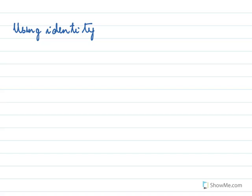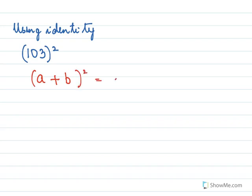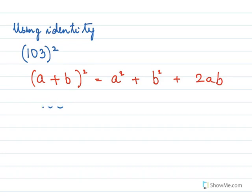Using the identity, find the value of 103 squared. First let's revise the identity: we know (a + b)² = a² + b² + 2ab. Now here we have 103, and 103 can be written as (100 + 3)², where 100 would be our a and 3 would be our b.